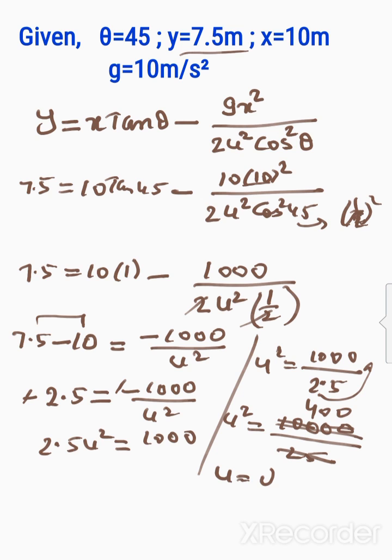Simplifying: 25 into 25 is 400 after cancellation. So u equals square root of 400, which is 20. The initial velocity is 20 meters per second.